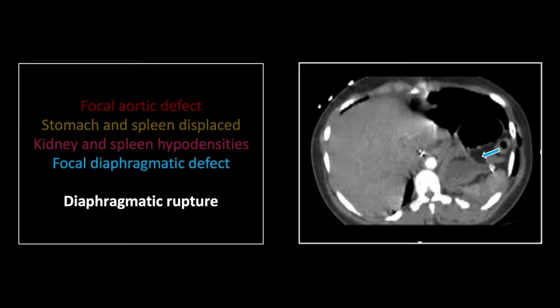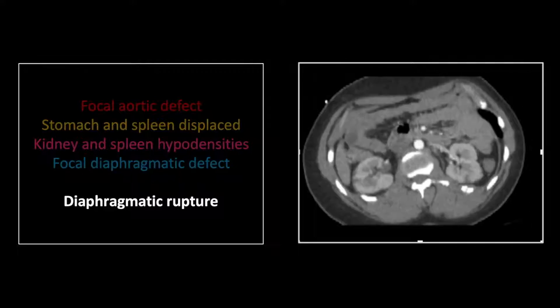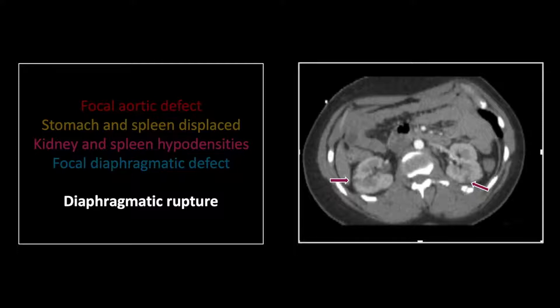There is also displacement of the viscera as they pass through the defect in the left diaphragm. The kidneys also demonstrate small wedge-shaped hypodensities consistent with thromboembolic infarcts — a very important indicator of a vascular injury.